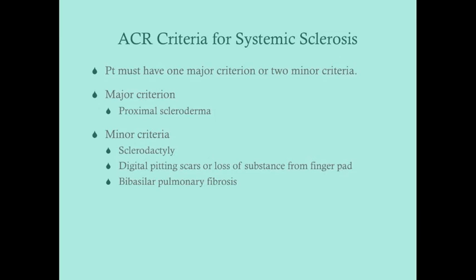The ACR criteria for systemic sclerosis include one major criterion and three minor criteria. You need either the one major criterion — proximal scleroderma — or two of the three minor criteria. The minor criteria are: sclerodactyly, digital pitting scars or substance loss from the finger pad, or bibasilar pulmonary fibrosis as diagnosed by chest x-ray.